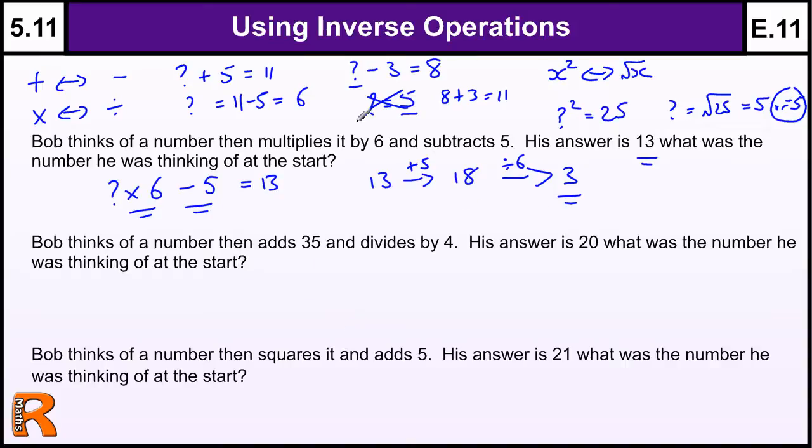With these sort of questions you can always check your answer. Bob thinks of a number, then adds 35. So he's thinking of a number and he's adding 35, and then he's dividing by 4, and that's equal to 20.